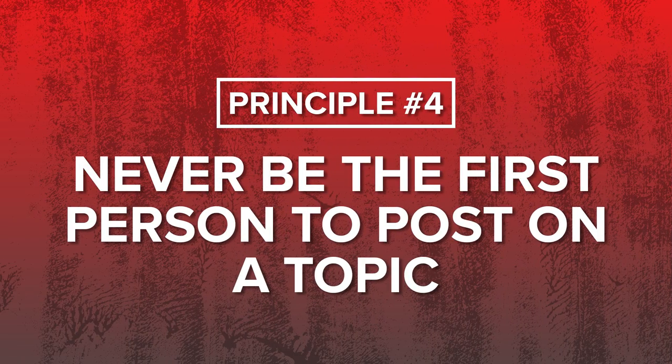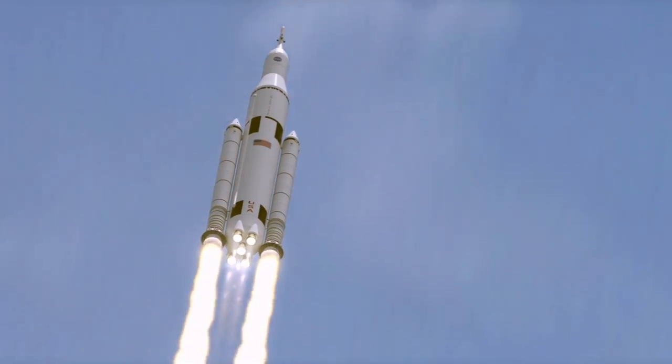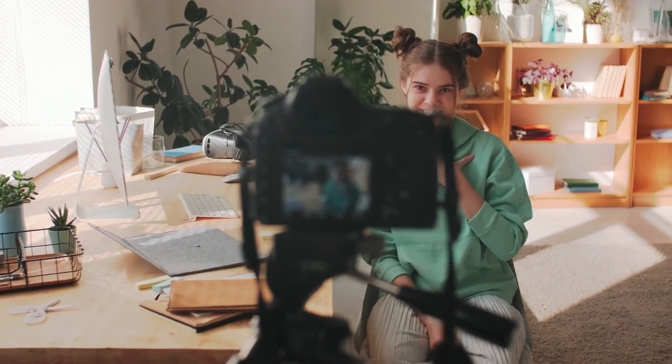Principle number four, which ties into number three, is to never be the first person to talk about a topic. Go after topics that are trending or have worked for somebody else, because you might get that creator's remnant views. For example, whenever Gary V — who I used to work for — talks about TikTok, my views on TikTok videos skyrocket. Not because search results increase, but because YouTube recommends related videos to people who just watched his content. Make videos complementary to what big creators in your niche are putting out, or content people are already searching for.